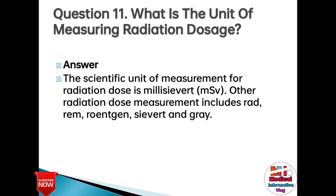Question 11: What is the unit of measuring radiation dosage? Answer: The scientific unit of measurement for radiation dose is millisievert (mSv). Other radiation dose measurements include RAD, REM, Roentgen, Sievert, and Gray.